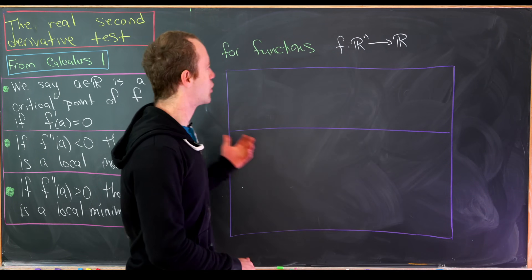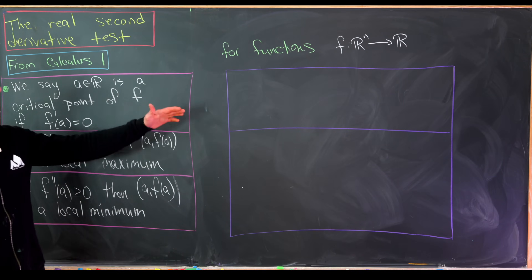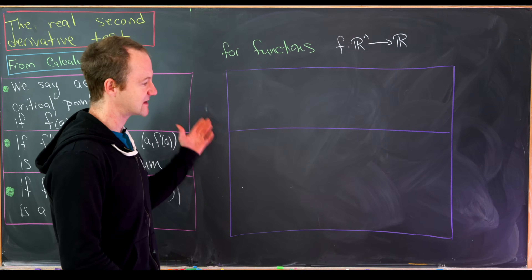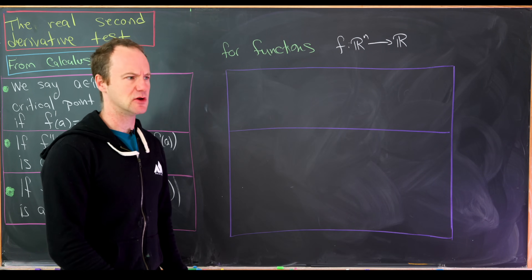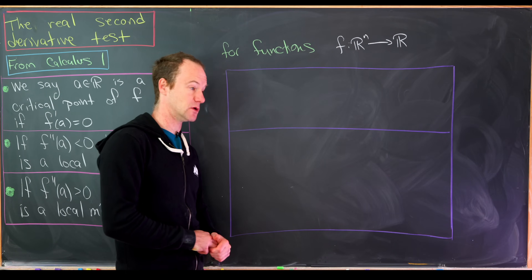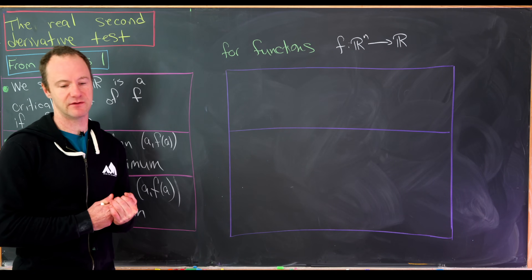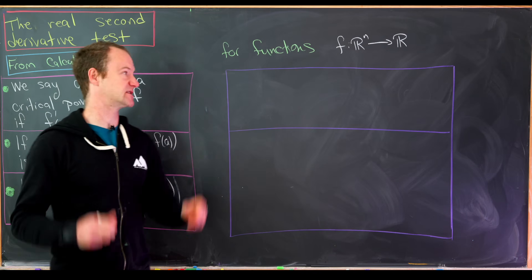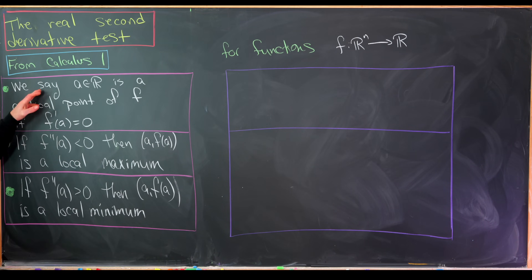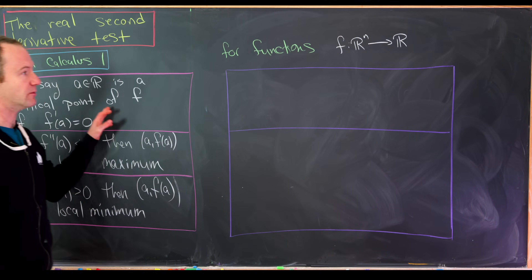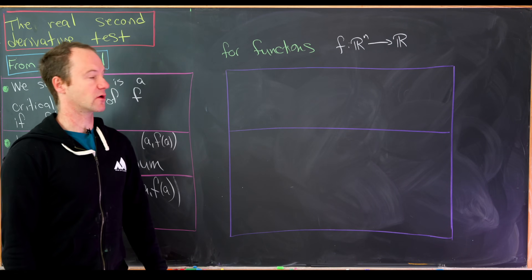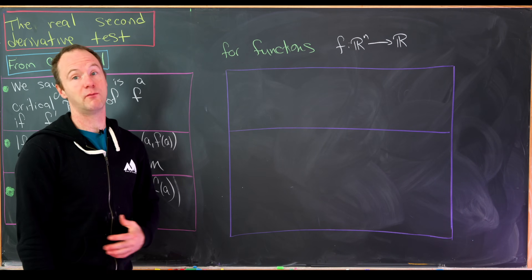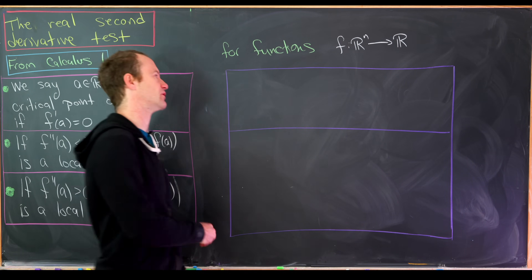Let's move the notion of a critical point to functions from R^n to R, then fix n equal to 2 and look at what is generally given in a first multivariable calculus class as the second derivative test — discuss a couple of problems with it, and then fix it. If you want the critical point to be where the derivative equals zero but you're working with multivariable functions, then the critical point is where all partial derivatives are zero, which is a reasonable thing to do.